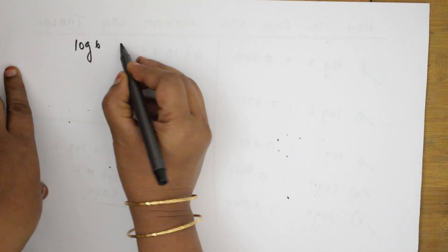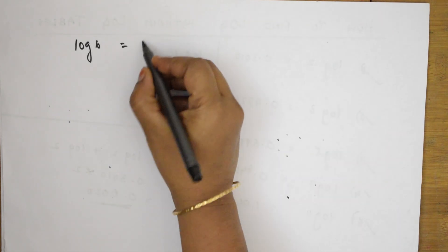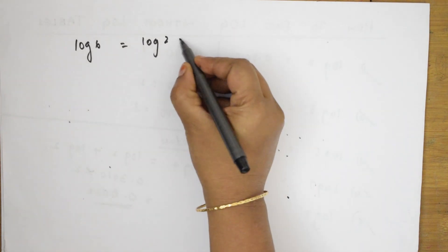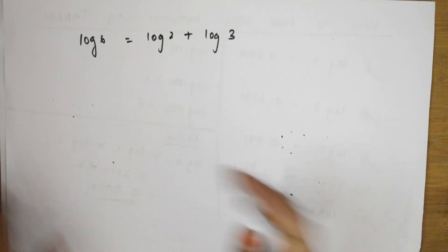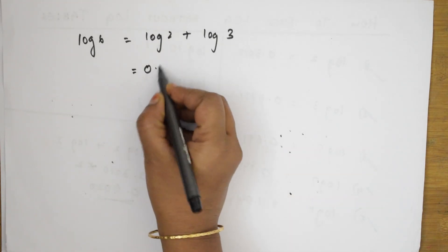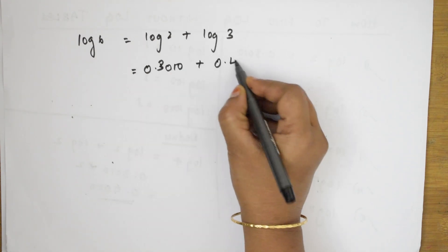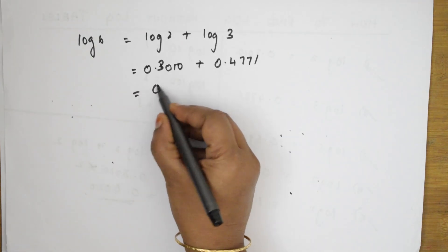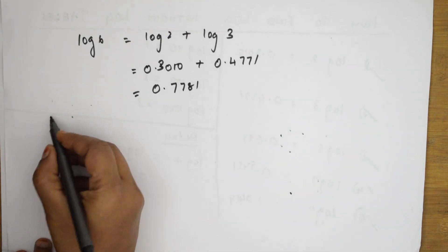Now suppose I need log 6. I don't know log 6 directly, but 6 = 2×3, so log 6 = log 2 + log 3. Log 2 = 0.3010 and log 3 = 0.4771. Adding these: 0.3010 + 0.4771 = 0.7781. So log 6 = 0.7781.